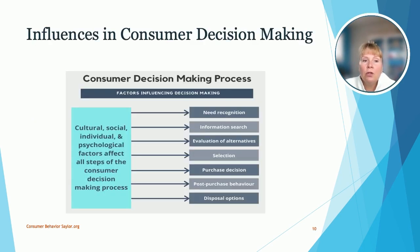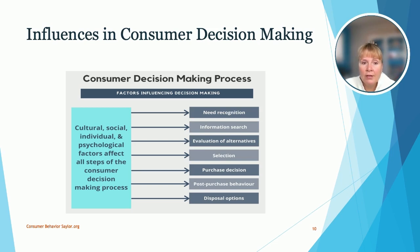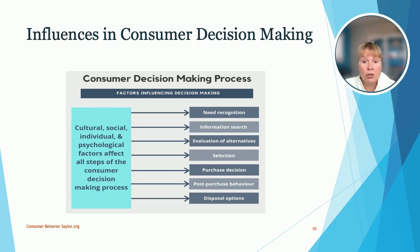Here we're looking at influences in the consumer decision making process. You have different cultural, social, individual, or psychological factors that might affect every step. Starting with needs recognition, then information search, coming up with alternatives, making a selection, purchasing the product, and then any post-purchase behavior — which might include returning it, or being so happy about the product that you leave reviews yourself. Eventually they'll also have to consider disposal options after some time has passed.